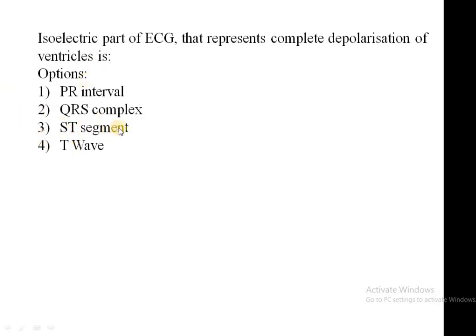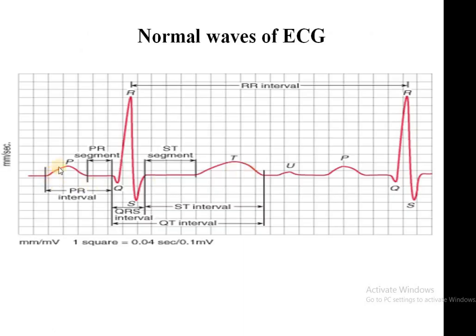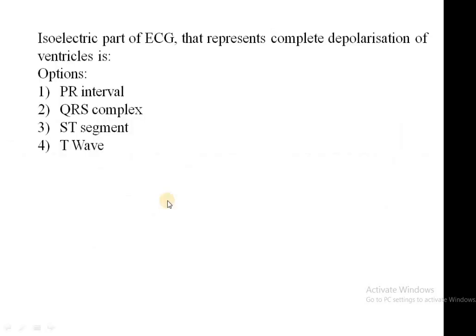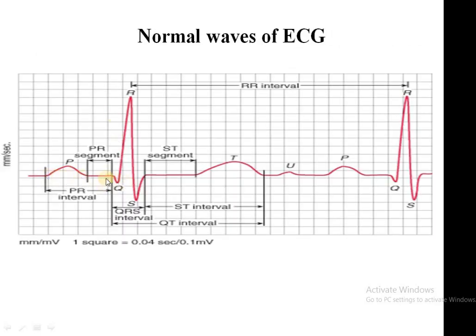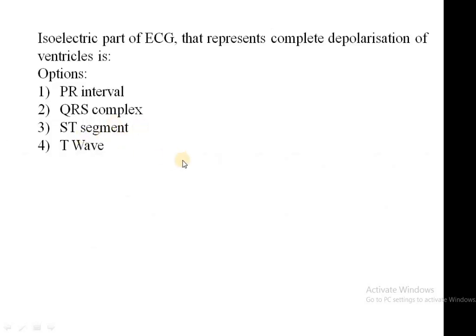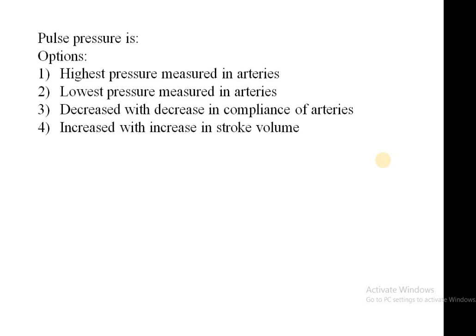Next question: the isoelectric segment of the ECG represents complete depolarization of the ventricle. There are only two isoelectric segments in the ECG — the PR segment and the ST segment. The answer should be the ST segment. Looking at the ECG: the PR segment is on the baseline — that is an isoelectric segment where no electrical activity is taking place. Then the QRS complex shows electrical activity. Then the ST segment is again isoelectric. The PR interval runs from the beginning of P to the end of R, so that is not purely isoelectric. Segments are isoelectric — the ST segment is isoelectric in the ECG.